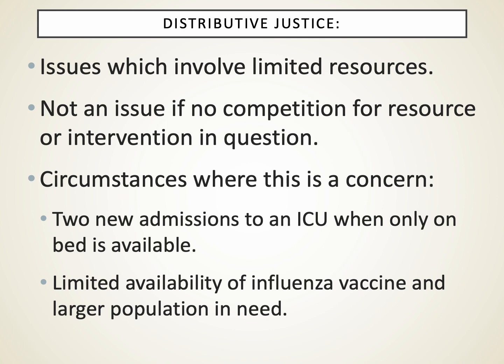Finally, the fourth issue is distributive justice. After weighing the good and the bad and being thoughtful about who makes the decision, this principle assumes there are not unlimited resources. Where it becomes an issue is when limited resources mean that a decision to move forward or withhold therapy impacts other people. For example, if you're working in the emergency department with three patients who need intensive care but the ICU only has two open beds — which two patients get those beds, and how is that decision made?